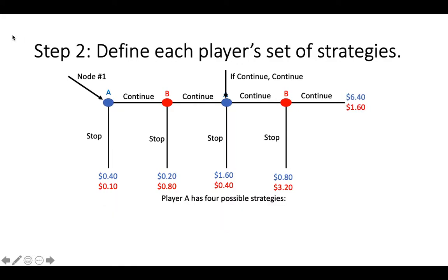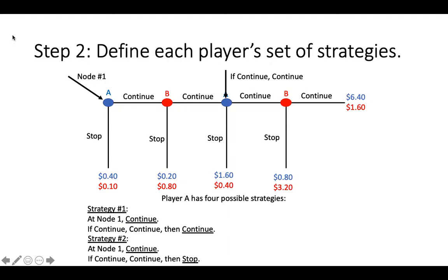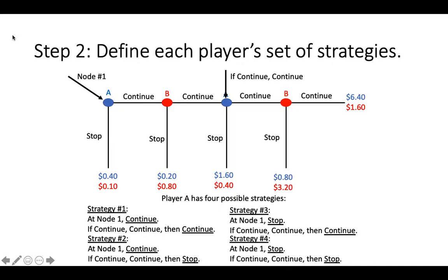Given that Player A has two possible actions at each node, Player A has four possible strategies: always continue, continue and then stop, stop and then continue, and always stop. If strategies three and four seem a bit strange, a strategy is a complete plan of action, so it must include a plan for Player A for their second node, even if they'll never get to execute that plan if they play the first part of their strategy correctly. You can think about the second part of those strategies as a contingency plan — what Player A would do if for some reason they made a mistake when executing the first part of their strategy.